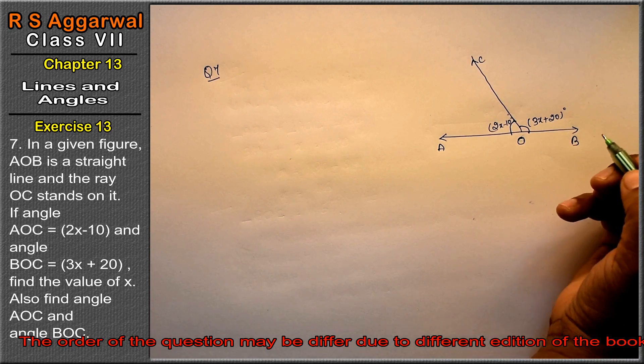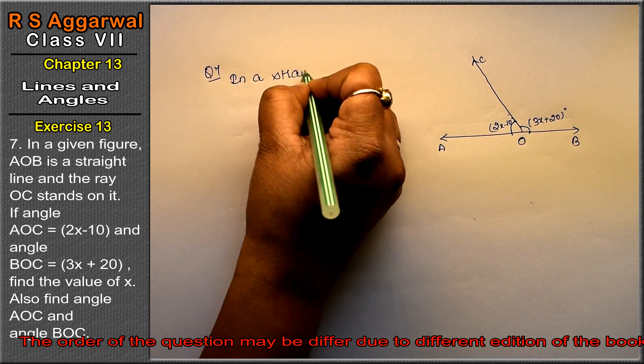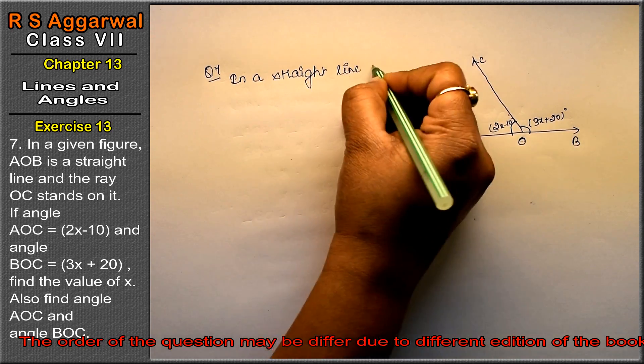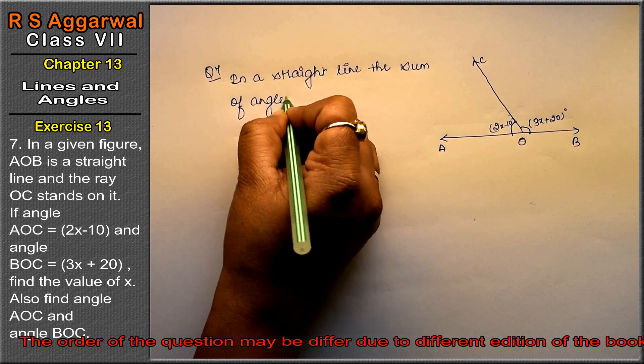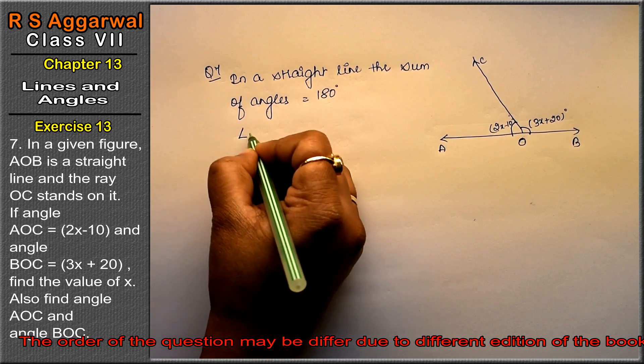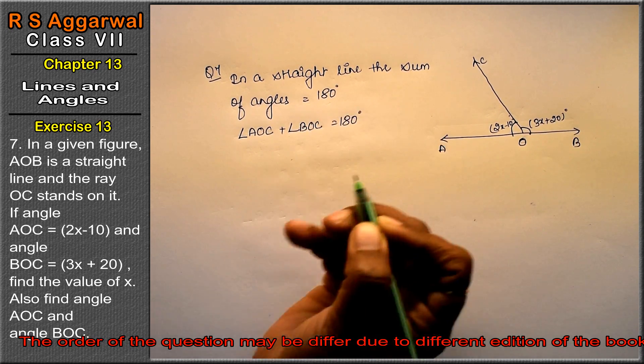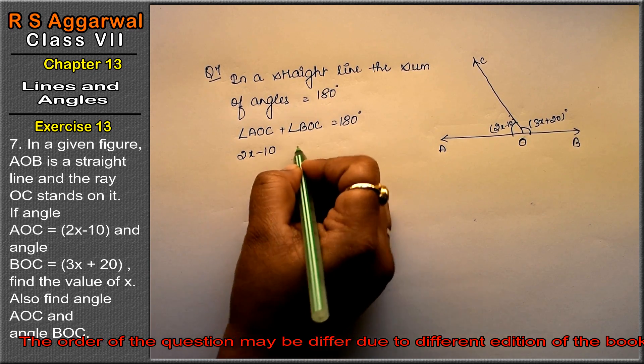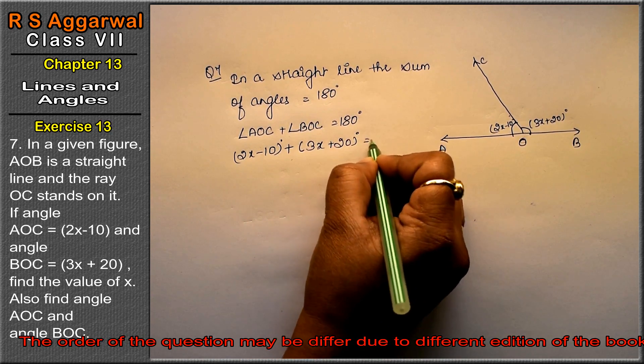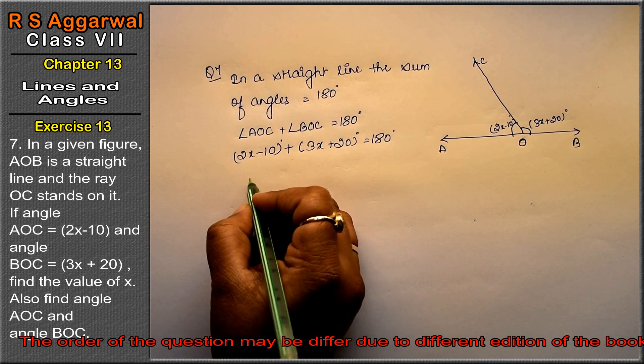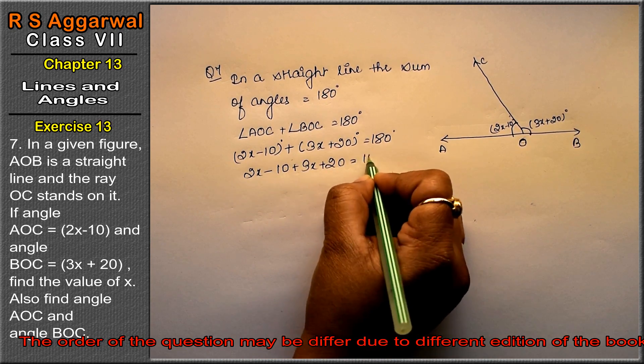Find the value of x. Friends, we have done the last question on a straight line. We know that in a straight line, the sum of angles equals 180 degrees. So angle AOC plus angle BOC equals 180 degrees. What is AOC? It's equal to 2x minus 10. Plus BOC equals 180 degrees. Now I open the brackets, so this is 2x minus 10 plus BOC equals 180 degrees.